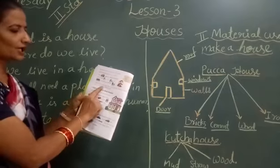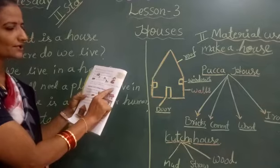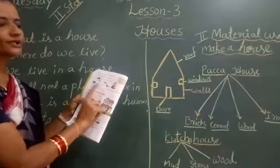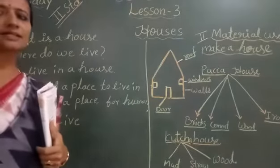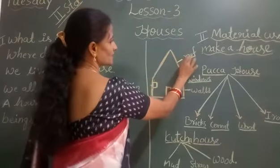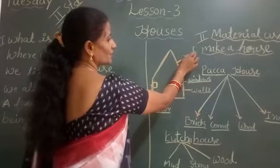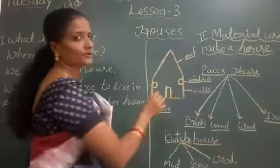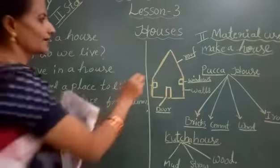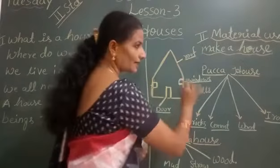A house has a roof, wall, doors and windows. There are different rooms in a house for different uses. I will draw one small house. See here — what is this? Roof. What is the spelling of roof? R-O-O-F. A house has a roof.